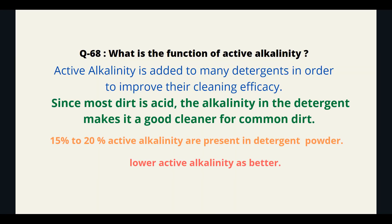What is the function of active alkalinity? Active alkalinity is added to many detergents in order to improve their cleaning efficiency. Since most dirt is acidic, the alkalinity in the detergent makes it a good cleaner. For common dirt, 15 percent to 20 percent active alkalinity is present in detergent powder. Lower active alkalinity is better.